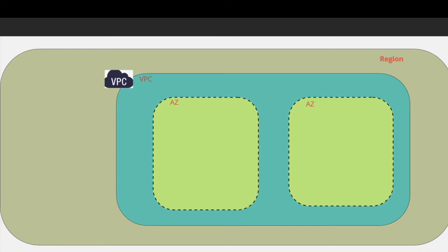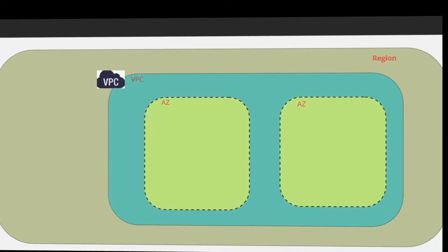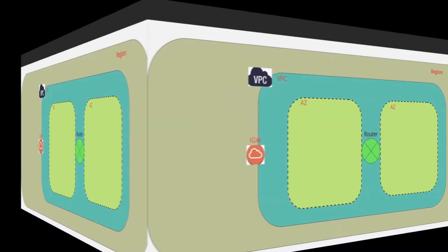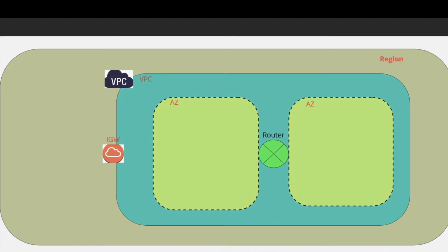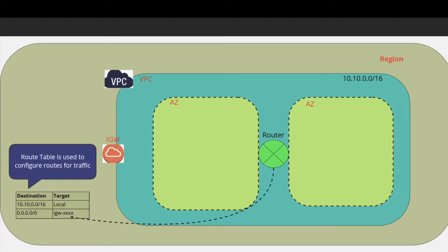Availability zones are nothing but a data center with higher availability. When you create a VPC, by default it creates a router, which is used to talk to all the resources within the VPC and any type of internet traffic. You can use an internet gateway to control that.